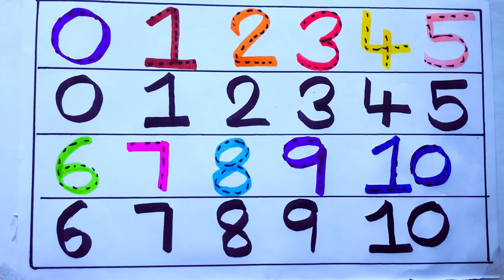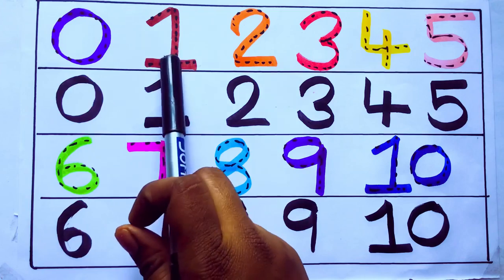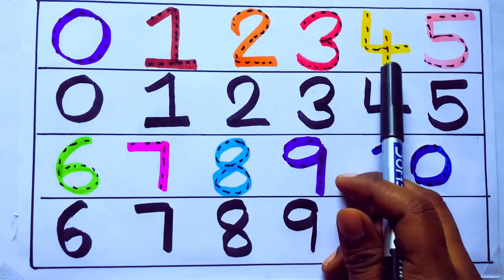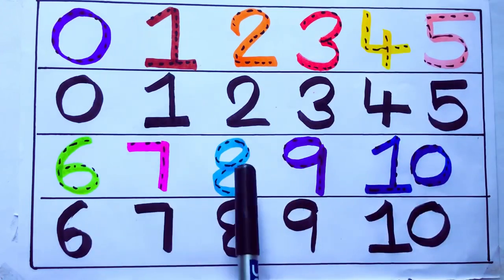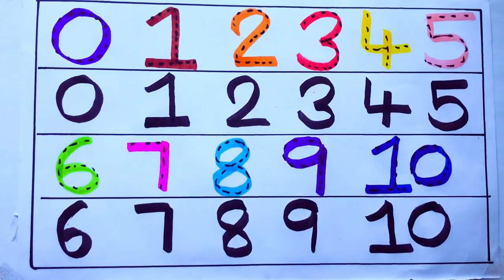Second learning numbers. 0, 1, 2, 3, 4, 5, 6, 7, 8, 9, 10. Okay.